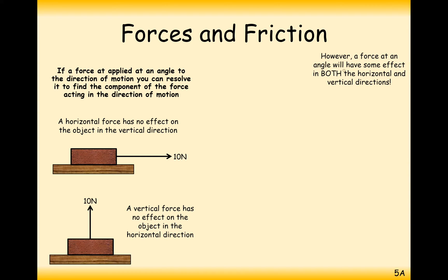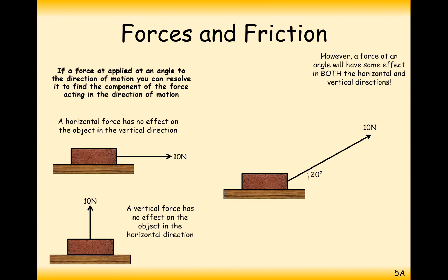However, a force at an angle will have some effect in both the horizontal and vertical components. For example, a string attached to a brick pulling at 20 degrees with a force of 10 newtons can be split into a horizontal component and a vertical component. Some of the 10 newton force acts horizontally, and some acts vertically. These three arrows form a right-angled triangle, so we use sine, cosine, and tangent to work out each component.